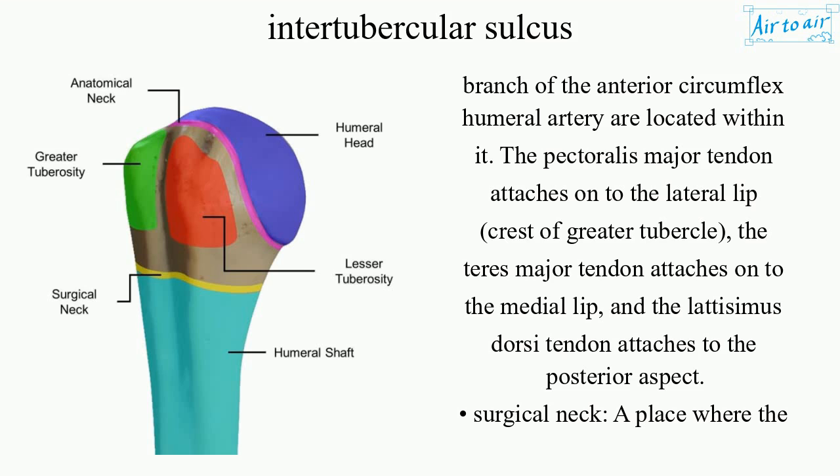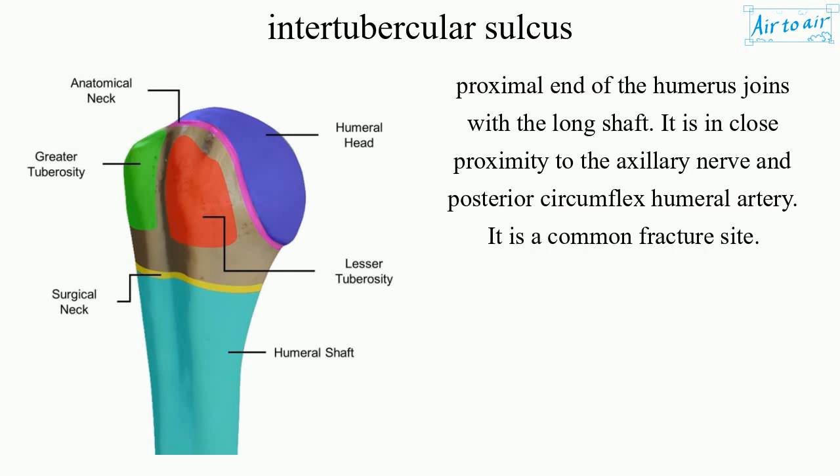Surgical neck: the place where the proximal end of the humerus joins with the long shaft. It is in close proximity to the axillary nerve and posterior circumflex humeral artery. It is a common fracture site.